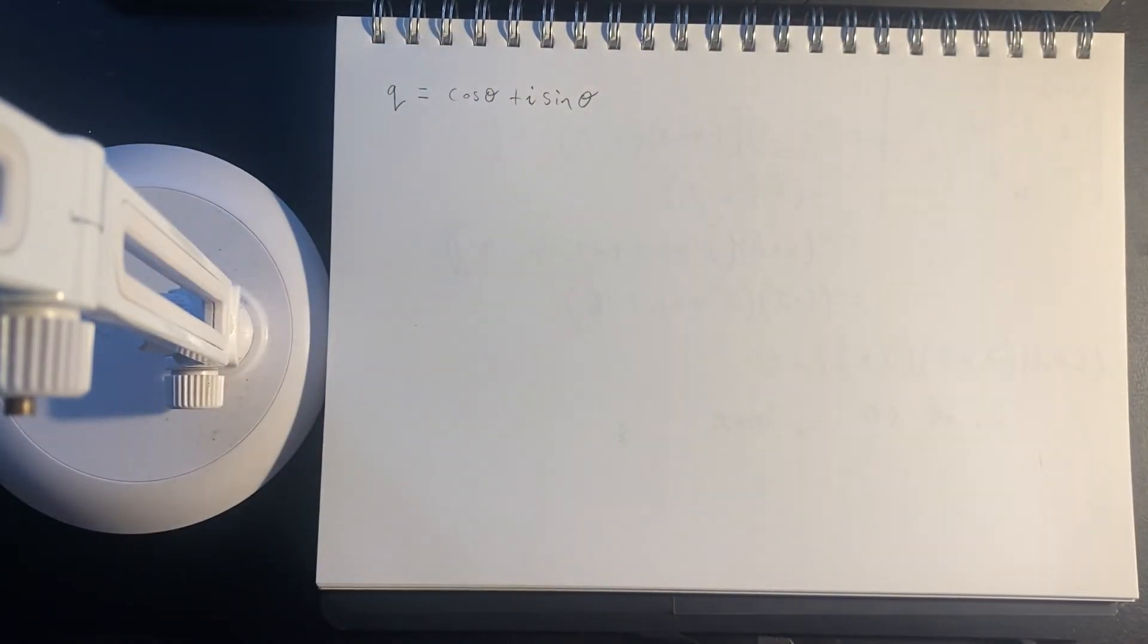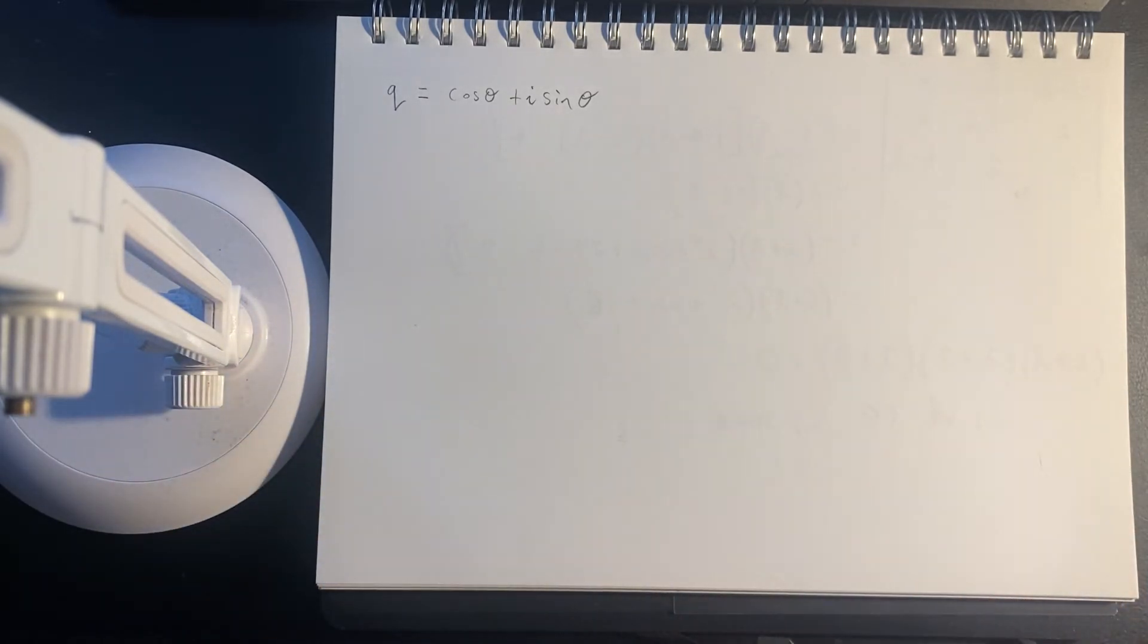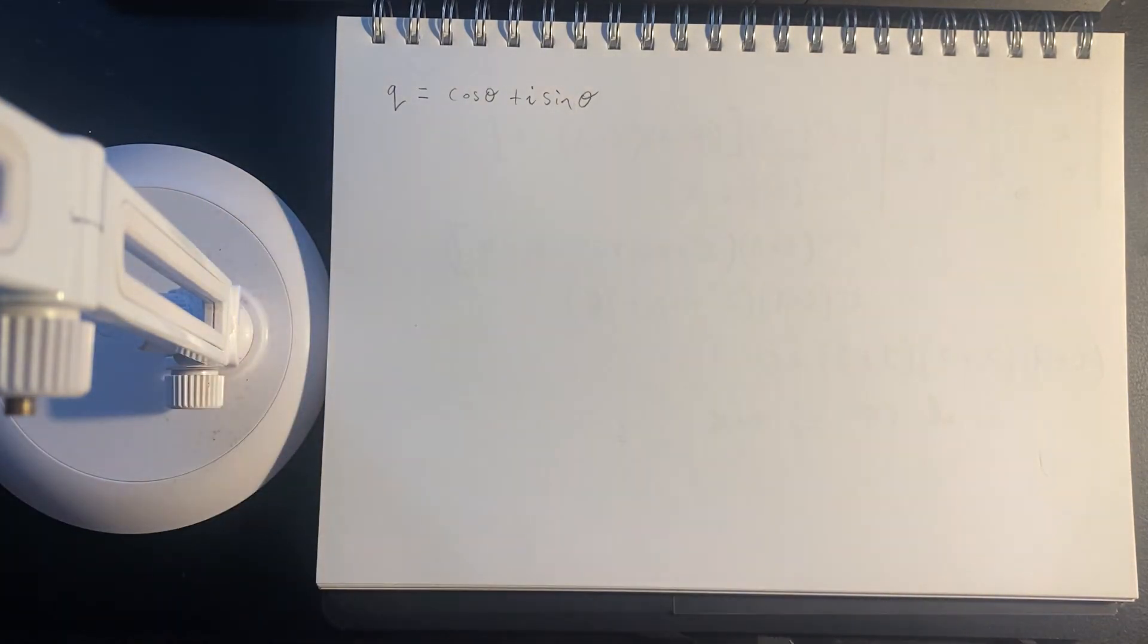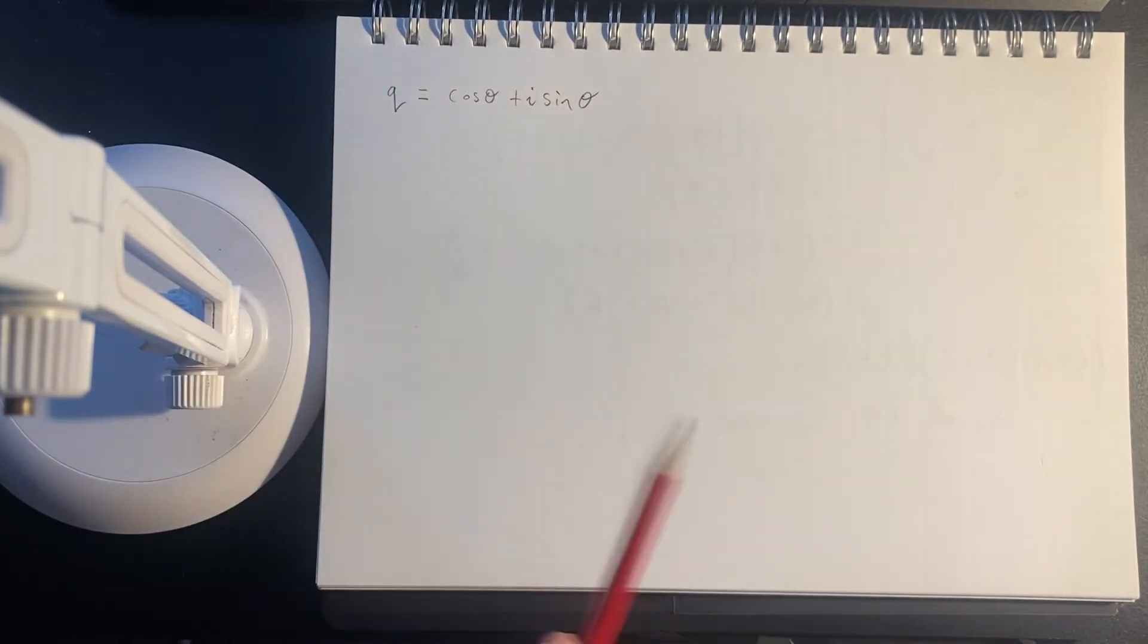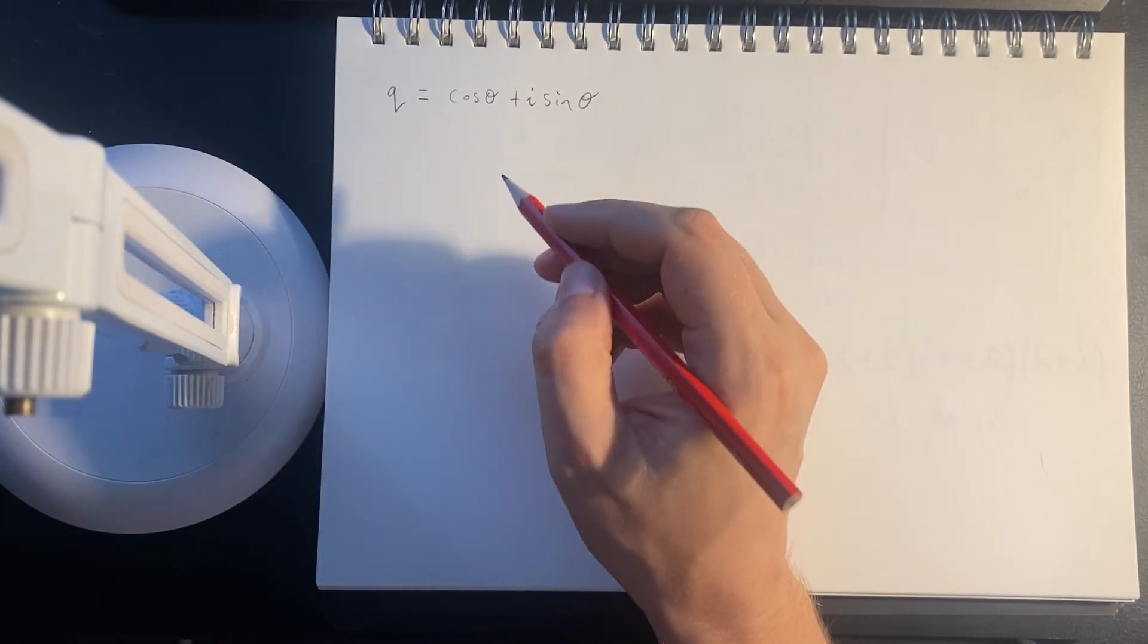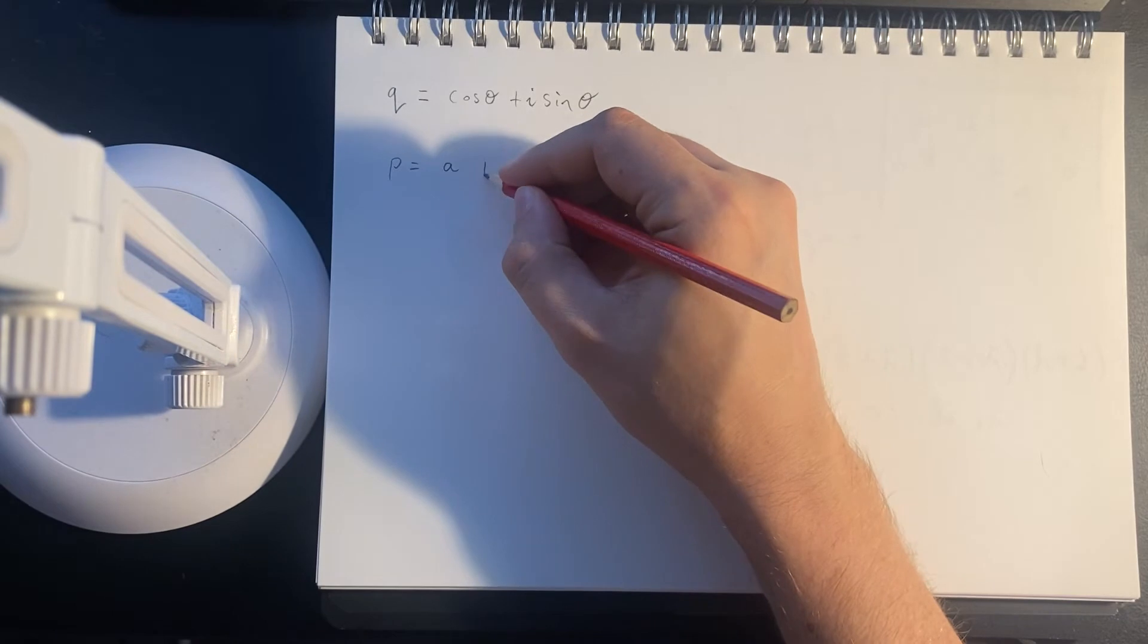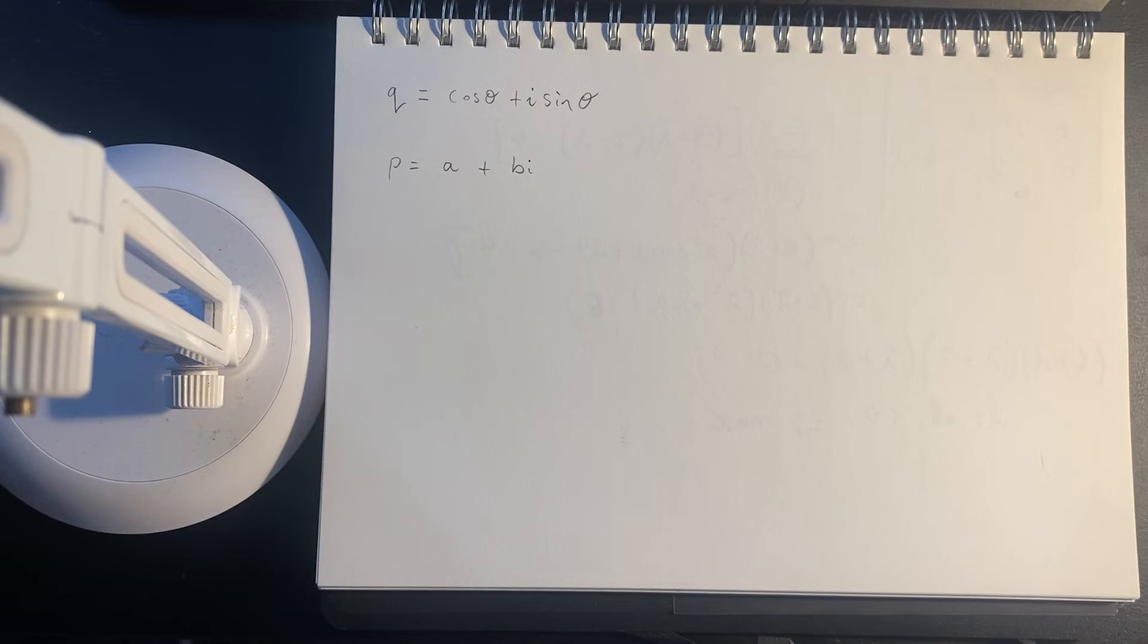And you may be aware that when we take various complex numbers and we multiply them together, that corresponds to rotating. So if I were to take this and multiply it with another complex number of magnitude 1, I would be taking that vector and rotating it by whatever angle the other number represented. But let's take a point, which I'll just call... It'll be a complex number as well. So a plus bi. And I'll rotate them together.